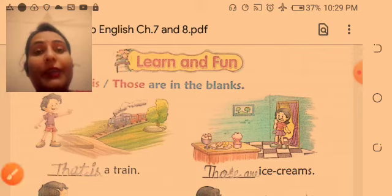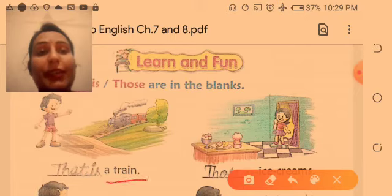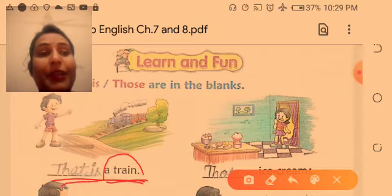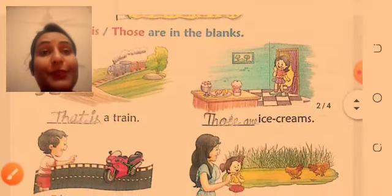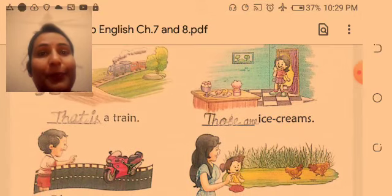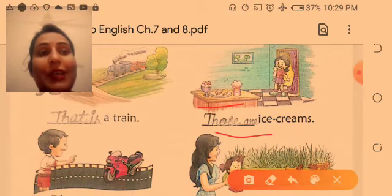A train, what? A train, that is a train. Single, so that is a train. Ice creams, more than one ice creams, those are ice creams.